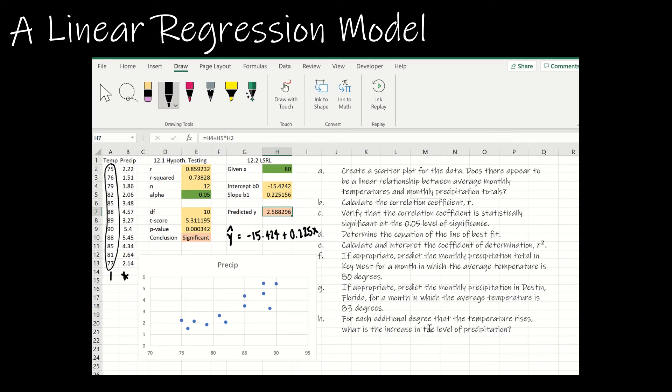G, if appropriate, predict the monthly precipitation in Destin, Florida for a month in which the average temperature is 83 degrees. Well, this data is for Key West and has nothing to do with Destin. So I can't do G. It's not appropriate. It's the different population than the sample.